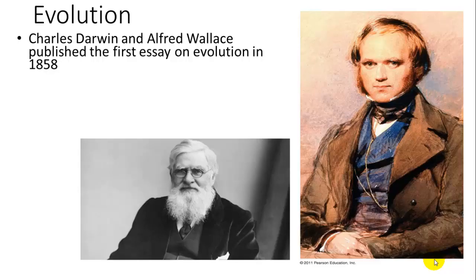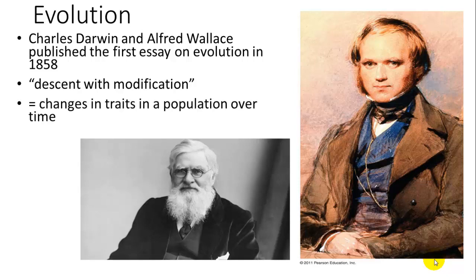So let's backtrack and talk about where this theory came from. It was first published in an essay by Charles Darwin and Alfred Wallace. Alfred Wallace, similar to Darwin, was a naturalist who went out making observations about animals and life he saw, usually in new places such as Southeast Asia. They published this based on the idea of descent with modification — living things are modified as they reproduce. We now define evolution as a change in traits in a population over time, from one generation to the next.